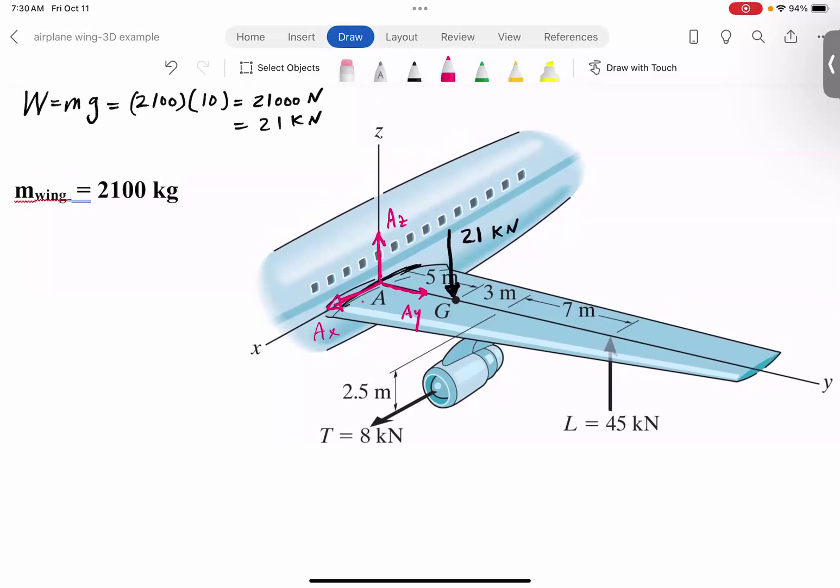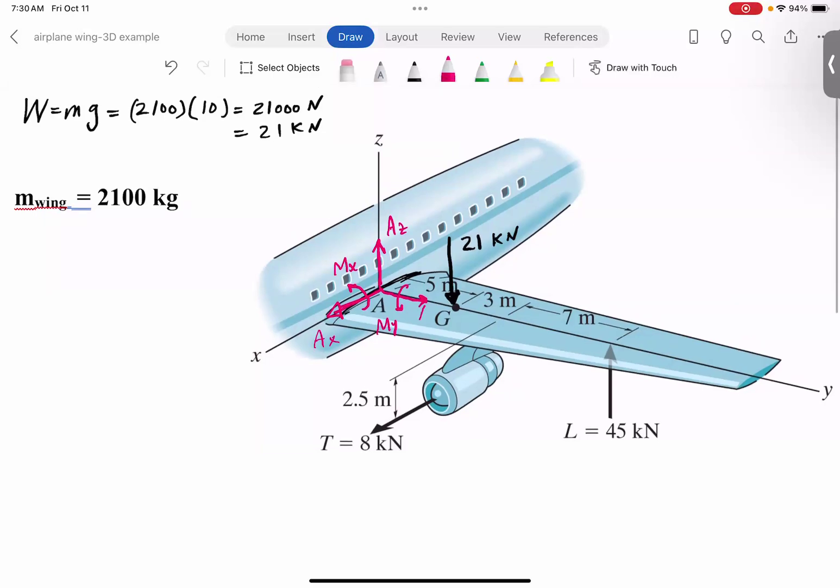Similarly, there is a moment reaction because it can't rotate about the X axis. So I'm going to use the right-hand rule. So that's the moment reaction about the X axis. I'm going to call it Mx. I'm going to call the moment reaction about the Y axis using the right-hand rule should be like that, My. And then finally, let me put this over here. And then finally, a moment reaction about the Z axis. So six unknowns here.